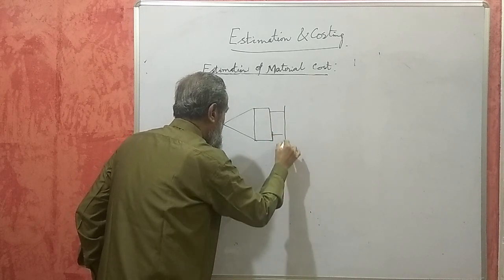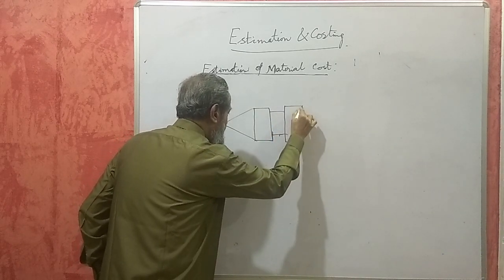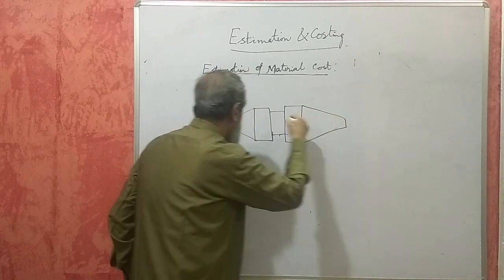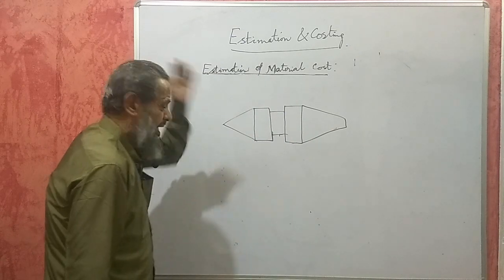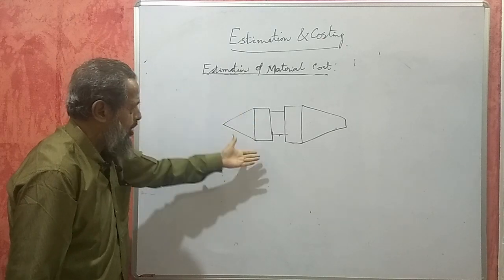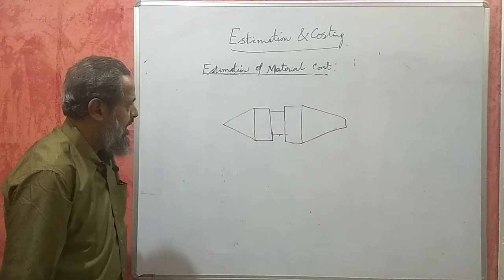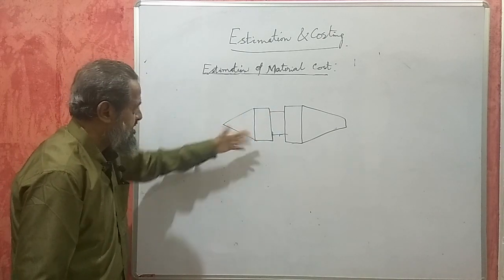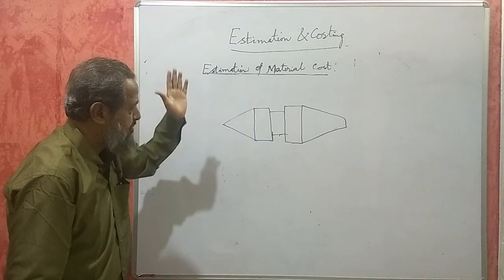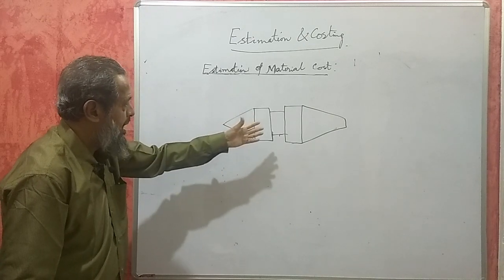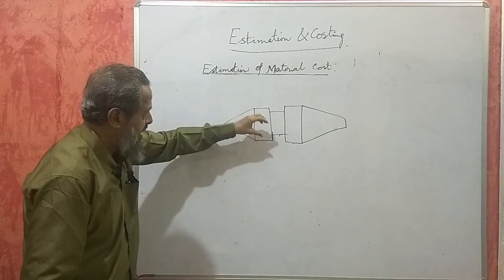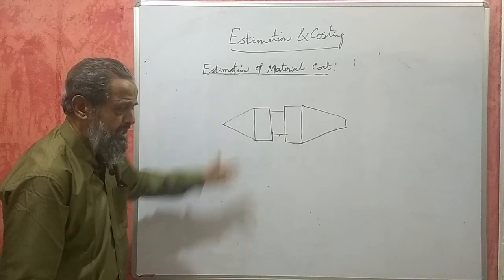This is the dead center of a lathe — something like this. Any component can be given; it is not necessary that this specific component must be given. Any one component like this is given with all its dimensions — its diameters, length, etc. And we are asked to find its material cost — that is, how much material has been put in this and what is the cost of that material.